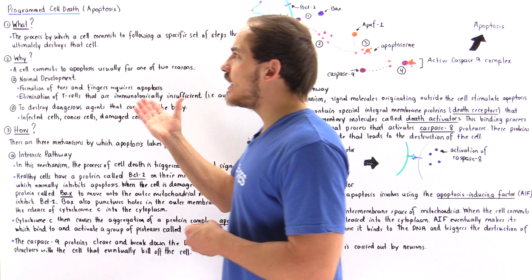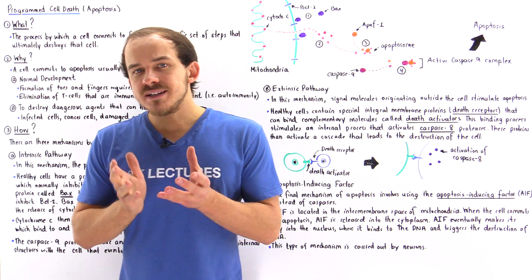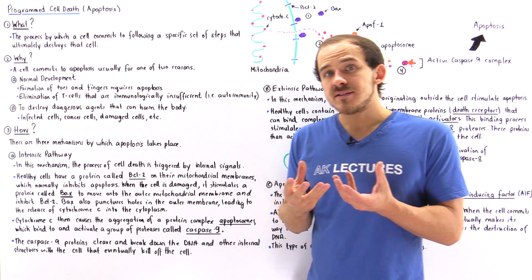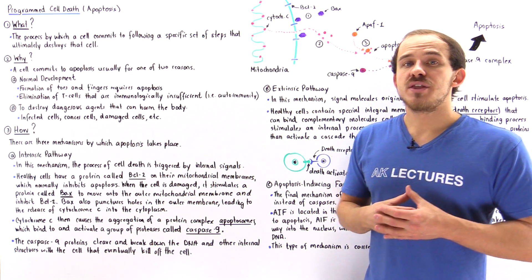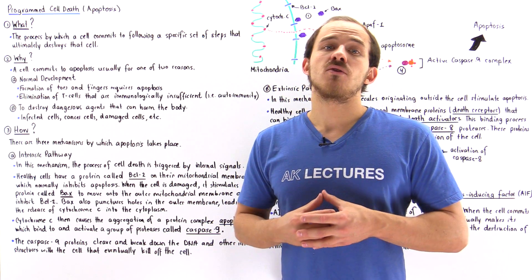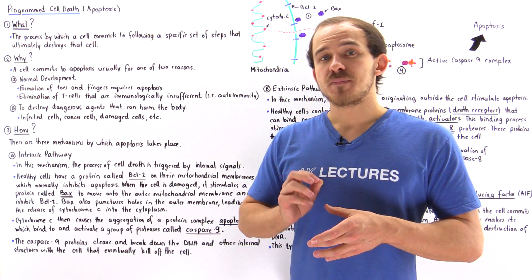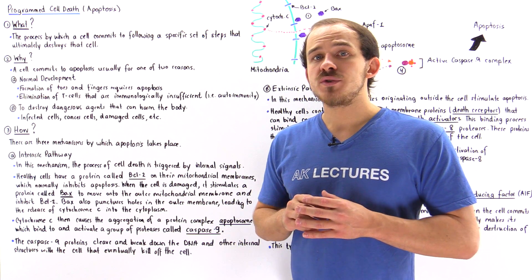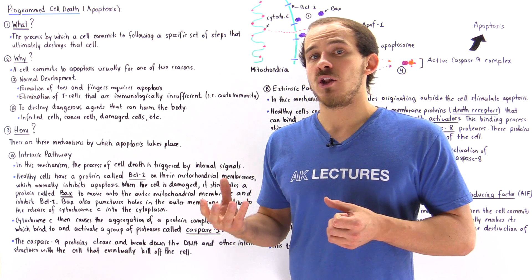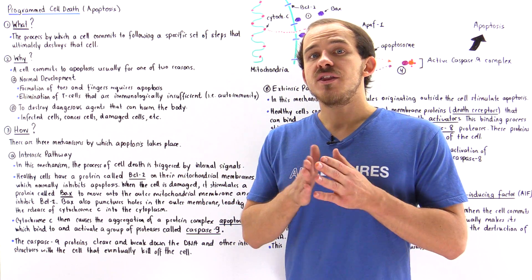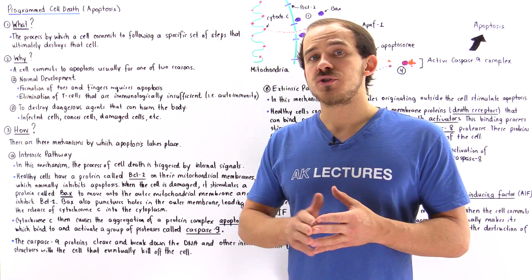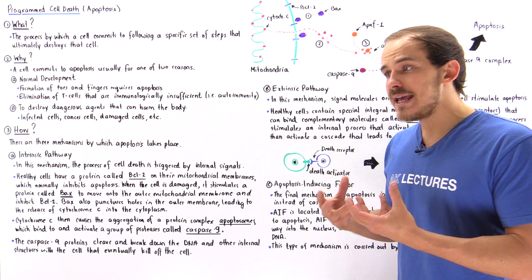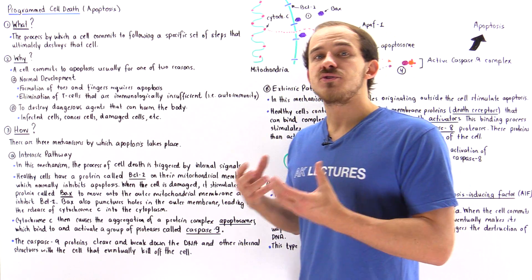Let's begin with the what. So what exactly is apoptosis? It's a natural process that takes place inside our own cells. And if the cell actually commits to apoptosis, what it does is it will follow a series of reactions that will eventually kill that cell off. So in a way, apoptosis is cell suicide.